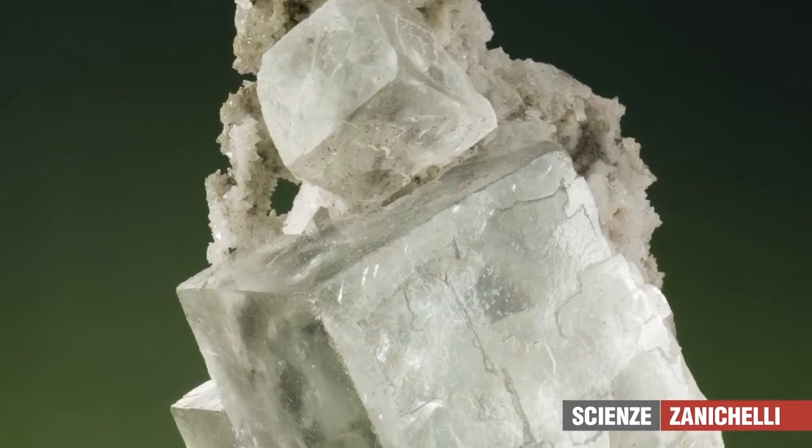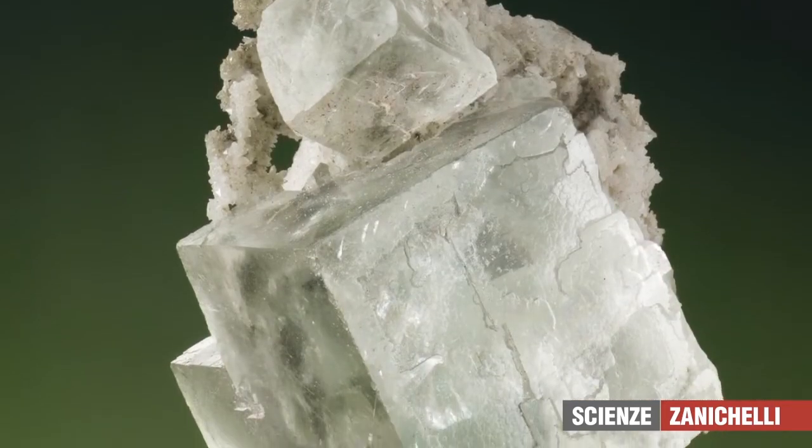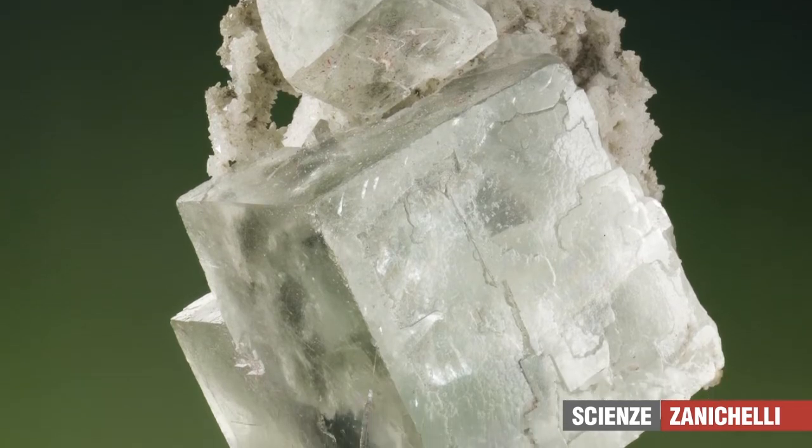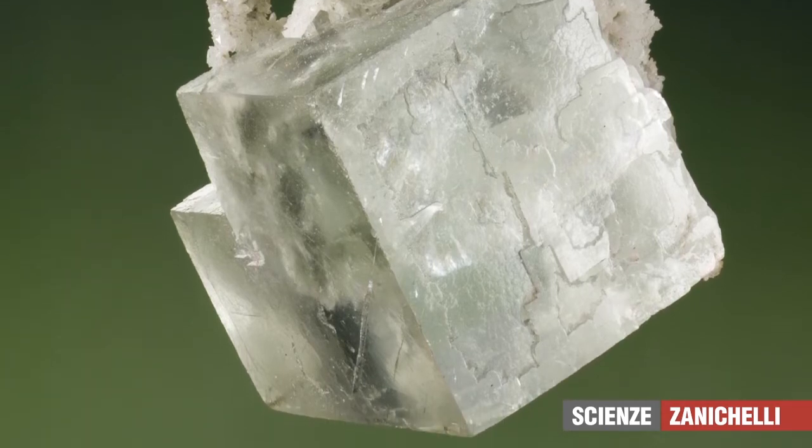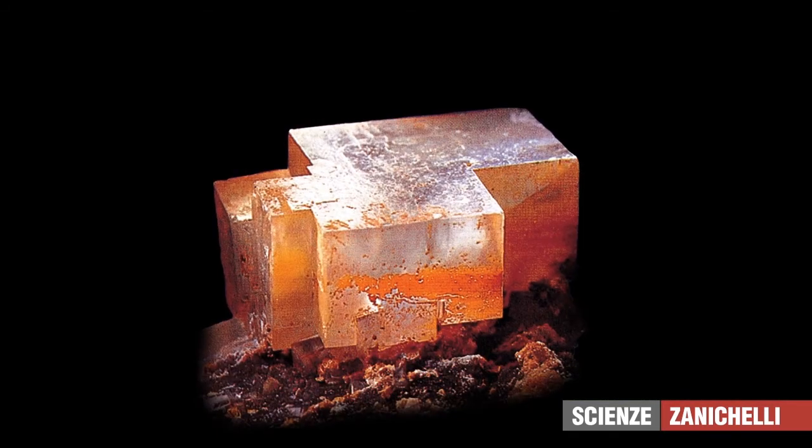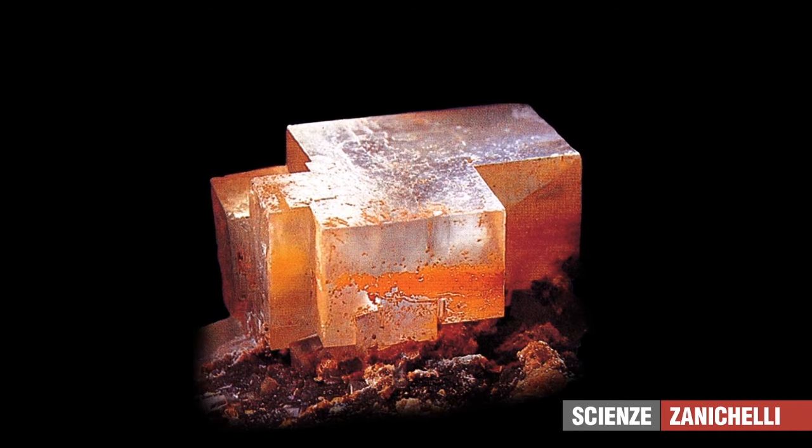In contrast, fluorite's habit reproduces the arrangement of the sides of a cube and is called cubic. Different minerals can have the same habit. For example, halite has a cubic habit like fluorite.